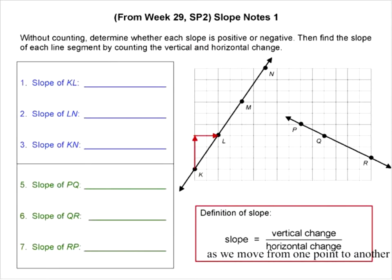So for problem number one right here, to go from point K to L, to find the slope of KL, we're going from K to L. I've already put in these directional arrows here. If we want to go, then we would have to go up first, and then go to the right.